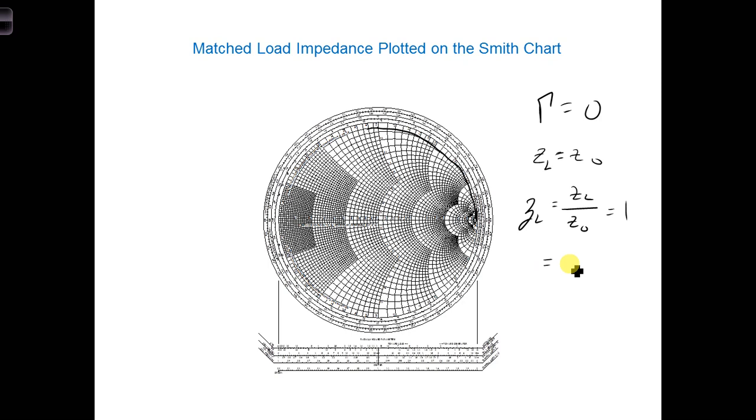Since little ZL is equal to R plus JX, that means we have 1 plus J0. So first we have to find the R equal 1 circle. And that actually goes right here.